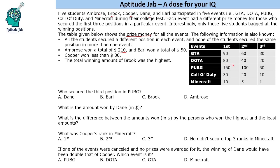Since Ambrose needs to make $210, which is a big number, he should ideally have $100 from one event. Suppose he doesn't win $100 — if he wins $60 somewhere, he still needs $150 more, and the maximum available doesn't reach $210. So he cannot reach $210 without winning the $100 prize. Therefore, Ambrose must win $100 in one event.